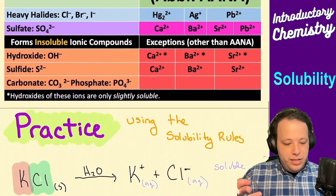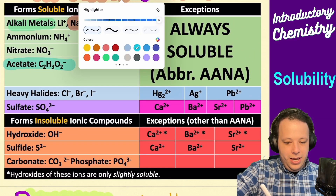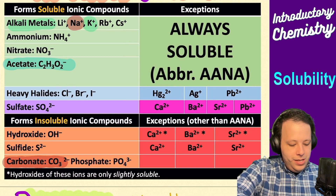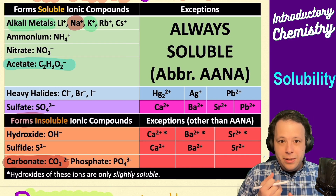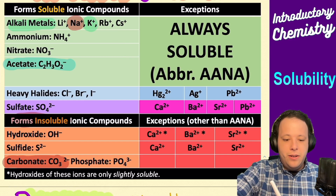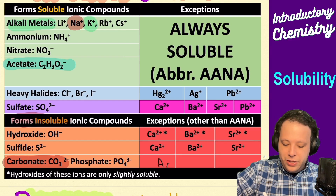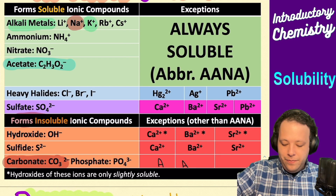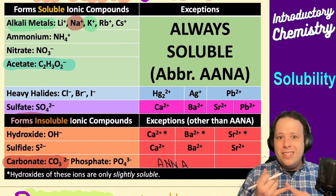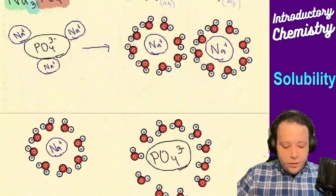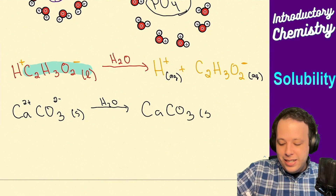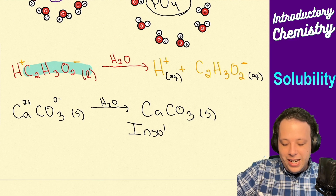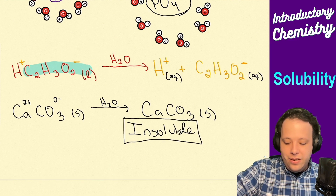Carbonate is insoluble, and there are no exceptions except when it's bound to ANA — that is the only time it is ever soluble. Being that this is insoluble all the time, it stays as a solid. We write insoluble next to it — that is our answer.